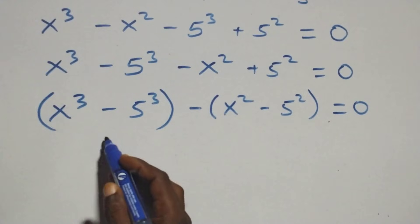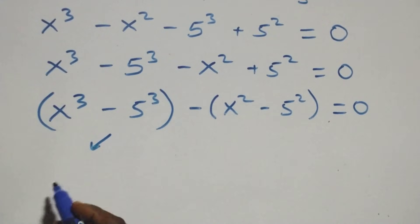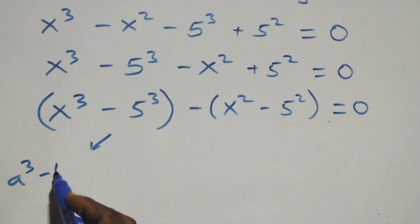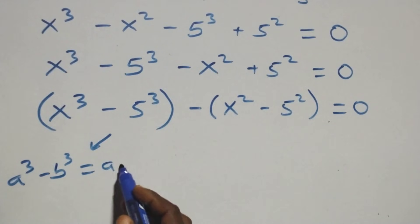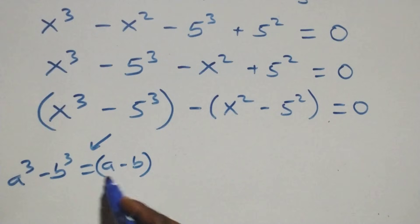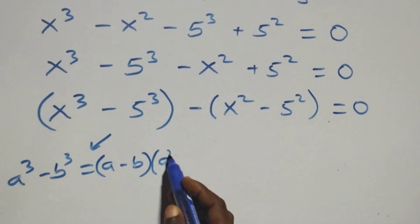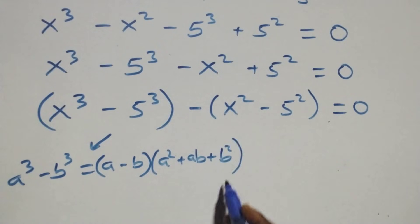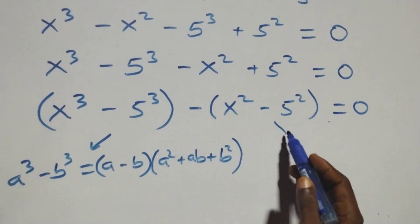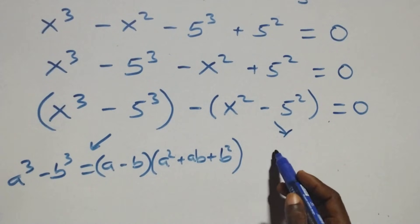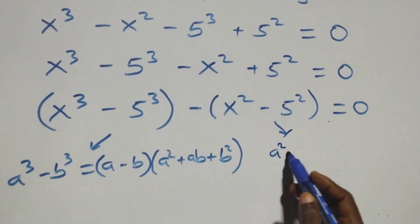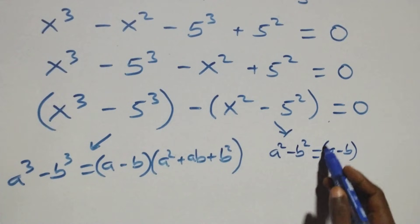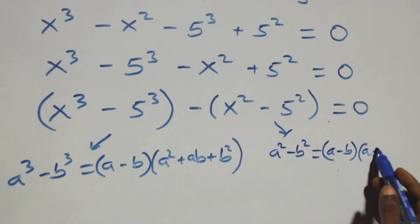From here, the first bracket follows the identity: when we have a raised to power 3 minus b raised to power 3, we can express this as (a minus b)(a squared plus ab plus b squared). And the second bracket follows the identity: when we have a squared minus b squared, which equals (a minus b)(a plus b).